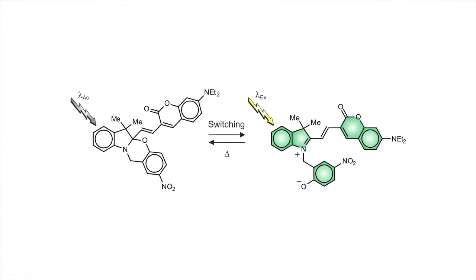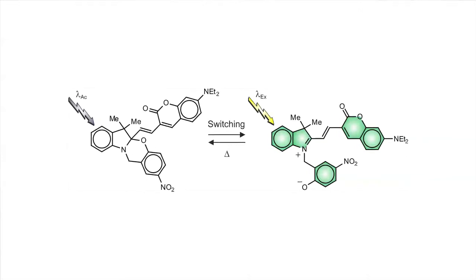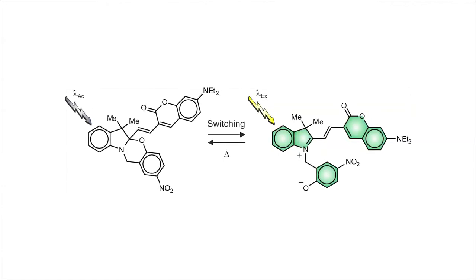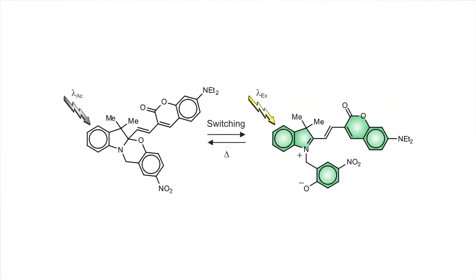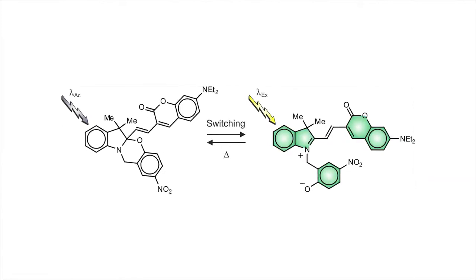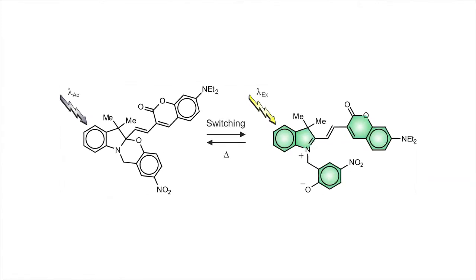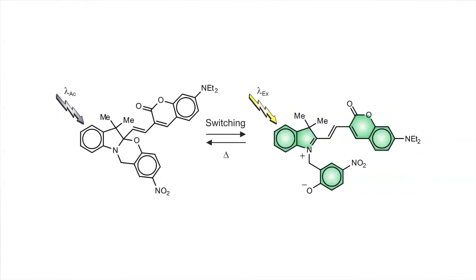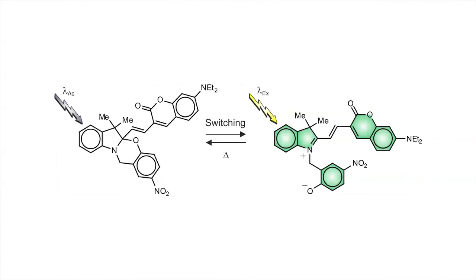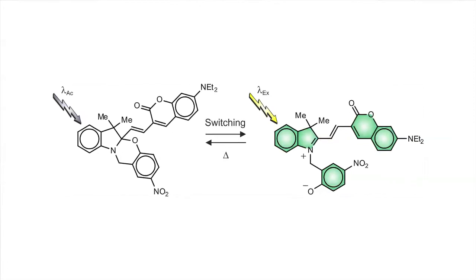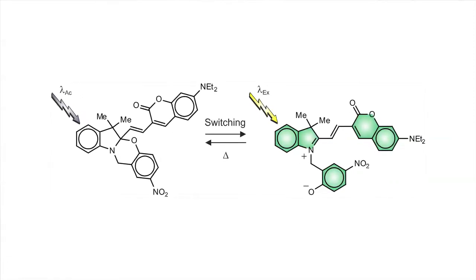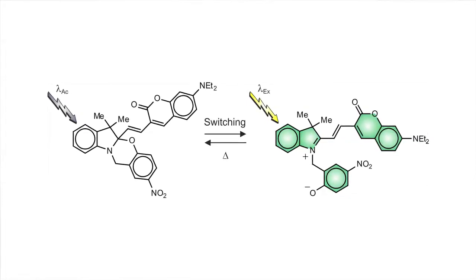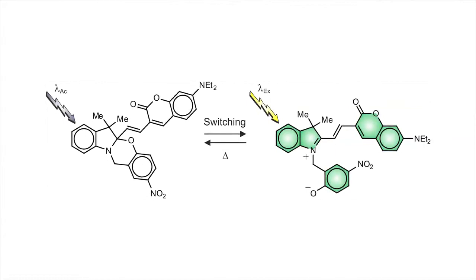For example, we have connected a coumarin fluorophore to a photochromic oxazine. Under illumination at an activating wavelength of 355 nanometers, the oxazine ring opens, bringing the coumarin fluorophore in conjugation with the indolium cation of the resulting zwitterionic isomer. This structural transformation shifts bathochromically the absorption of the coumarin fluorophore and allows the absorption of exciting radiation, activating its fluorescence.